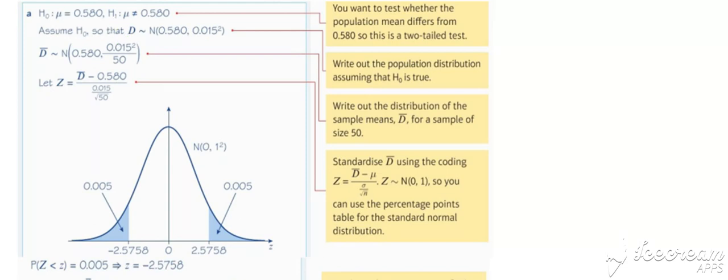So set up your null and alternative, so mu equals 0.58 against the alternative, which is a change, no direction implied, so it's a two-tail test and not equal alternative hypothesis.